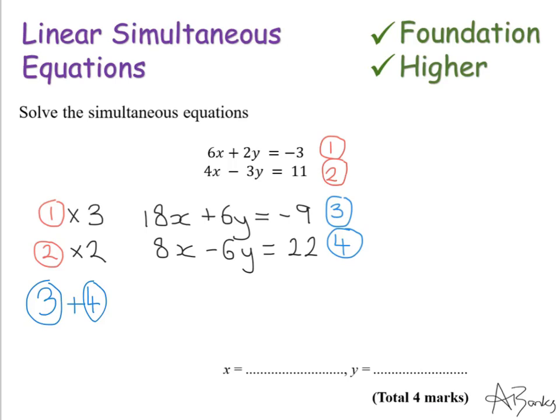So I've got 18x add 8x is 26x. I have 6y add minus 6y, which means that these cancel out. And that's the whole reason I'm doing this step, is to get rid of my y values. So I can just write equals and I've got minus 9 add 22, which is 13. It's a very simple equation I've got to solve now. This means that x is 13 divided by 26, which is a half. So my answer for x is a half.